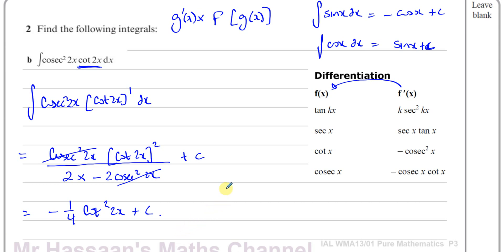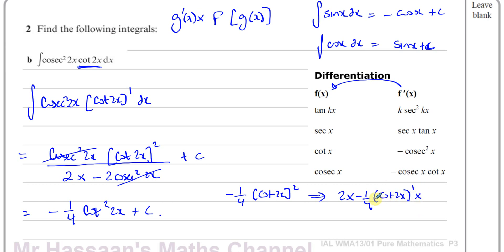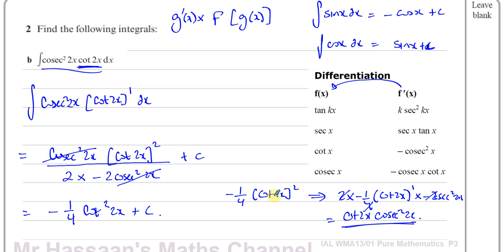We can verify that's the answer by differentiating. Taking negative one quarter times cot of 2x squared and differentiating: multiply by the power 2 to get 2 times negative one quarter, take one from the power, then multiply by the differential of what's inside, which is negative 2 cosec squared 2x. The negatives give positive, the 4 over 4 cancels, leaving positive cot of 2x times cosec squared 2x — exactly what we started with. So that's the answer for part B.